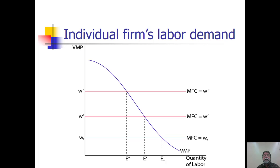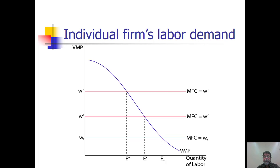Let's consider three different wages. At a wage of W-zero, the optimal level of employment is where the wage equals the value of marginal product, which is at E-zero. When the wage rises to W-prime, the optimal employment occurs at E-prime. When the wage rises to W-double-prime, the optimal employment occurs at E-double-prime. This shows that for each wage, the optimal level of employment occurs where that wage equals the VMP. The VMP curve tells us the quantity of labor demanded at each wage — making it nothing more than a labor demand curve. For a firm in perfectly competitive output and resource markets, its labor demand curve is just the value of the marginal product curve.